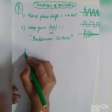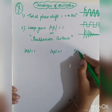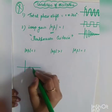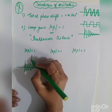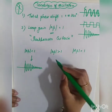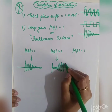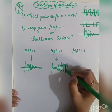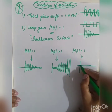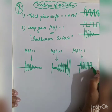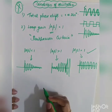If A_v × beta is less than 1, the amplitude decreases over time and the signal gets damped. If A_v × beta is greater than 1, the amplitude keeps increasing and there is instability. Only when A_v × beta equals 1 do you get sustained, constant-amplitude oscillation.